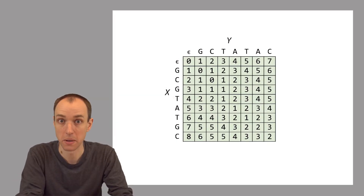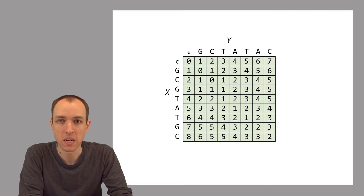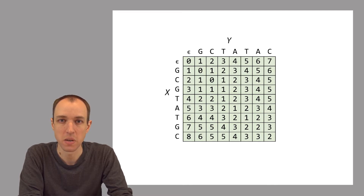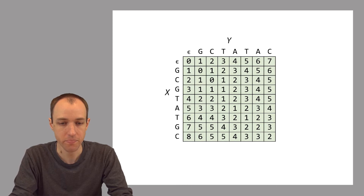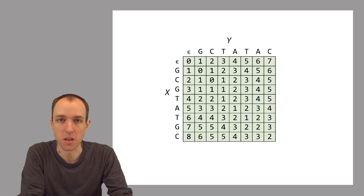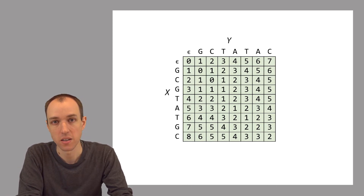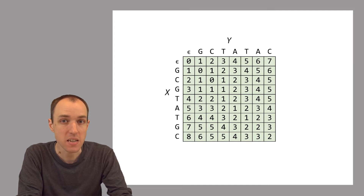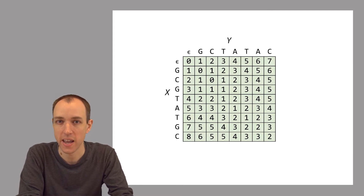So let's start with global alignment. Edit distance penalized all the different kinds of edits that we might find the same amount. Whether it was a mismatch or an insertion or a deletion, edit distance would penalize that at the unit of one. Each one of those things incurred a penalty of one. So there is no difference, for example, between the penalty for an insertion versus a substitution, and there is no difference between the penalty for a substitution that turned an A into a C versus a substitution that turned an A into a T.